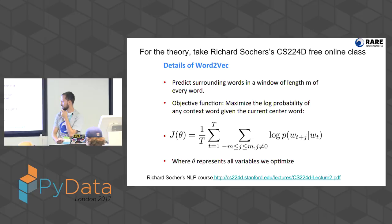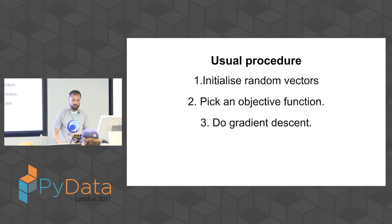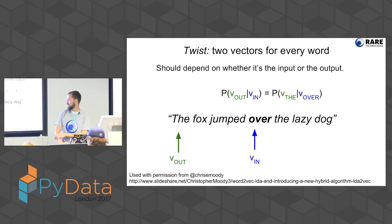Just as usual, you start up randomly and then do gradient descent. There are some parameters like learning rate and number of passes over the corpus, just as it usually happens.